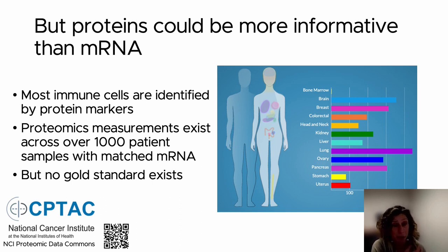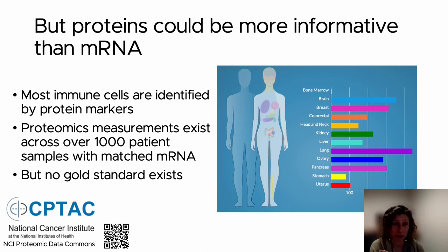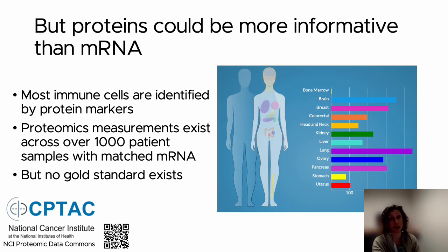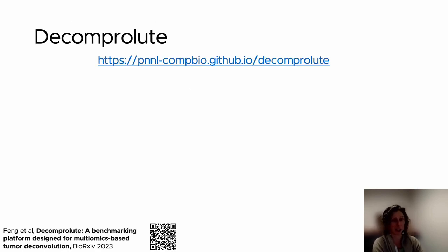When we go to deconvolve these tumors, we're missing one thing: the absence of an algorithm that has been measured with a gold standard. Because no gold standard exists — something like taking a known mix of cells, measuring their proteins individually, then mixing them in different fractions like 50% CD4 cells and 50% T cells and trying to extract that information back — we don't have that proteomics gold standard, so we developed Decomprolute to get around that.